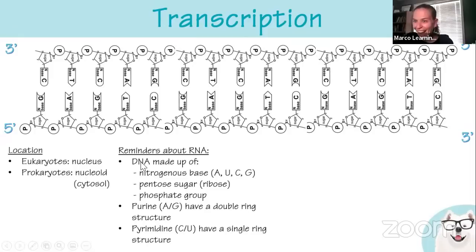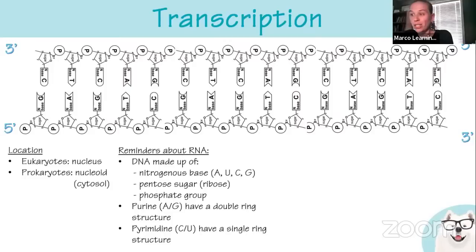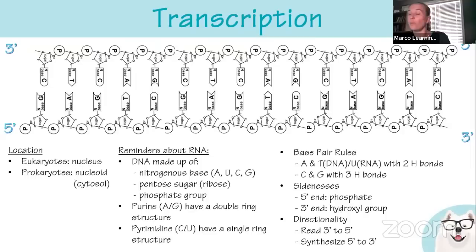The pentose sugar in RNA is ribose instead of deoxyribose, and there is a phosphate group attached. The key differences between DNA and RNA: RNA has uracil instead of thymine, ribose instead of deoxyribose, and is single-stranded instead of double-stranded. Adenine pairs with uracil (two hydrogen bonds), and cytosine pairs with guanine (three hydrogen bonds). You read DNA 3' to 5' and synthesize RNA 5' to 3'.